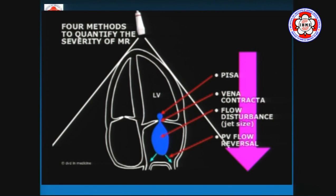Let's look at grading of mitral regurgitation severity. If you look at an MR jet by echo, there are several different components. First, in this apical four-chamber view with LV and LA, you have this area of proximal flow convergence — that's where the blood is getting ready to come in through the regurgitant orifice. Then you have that narrowed orifice, which is like the vena contracta. And finally, you have the regurgitant volume and the downstream effects. In Bangalore terms, this would be like Bangalore roads — all the traffic trying to get into this narrow orifice, and then finally getting out.